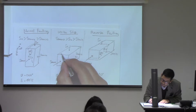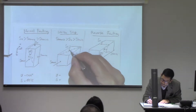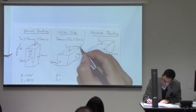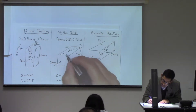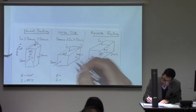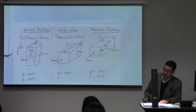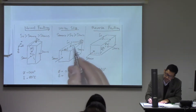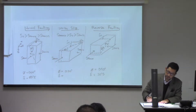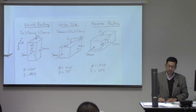Let me draw one of those solutions. If this is north, then this angle is going to be 60 degrees, which means this one is going to be 30 degrees, so the strike is going to be 30. And what is the dip of such a fault? It's a vertical plane, so it's 90 degrees.